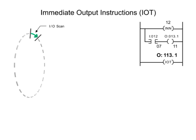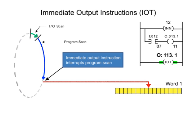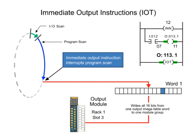The immediate output instruction operates similar to the immediate input instruction. As the scan is interrupted, the bits of the addressed word are updated and the field outputs are energized or de-energized according to the output image table.